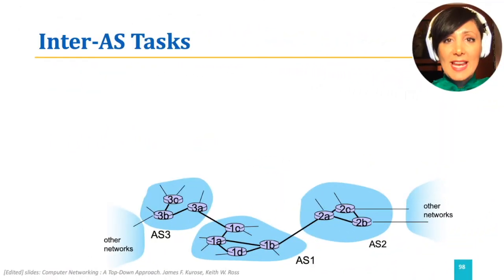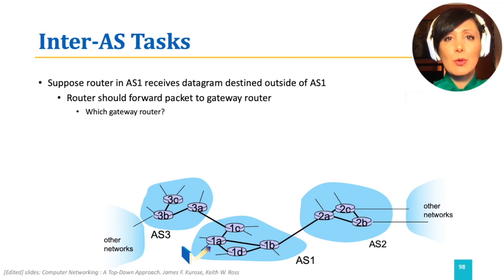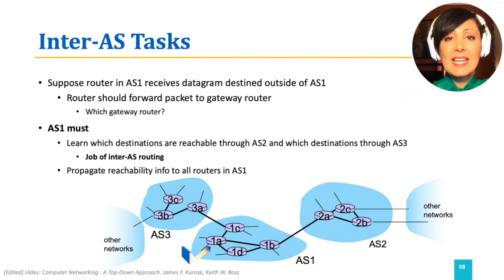Suppose router 1A in AS1 receives a datagram destined outside of AS1. How should router 1A forward the packet? The first step is to forward it to a gateway router. But AS1 has two gateway routers, 1C and 1B — which gateway router should it forward the packet to? To be able to do this, AS1 must first learn the destinations that are reachable through AS2 and AS3. This is the job of inter-AS routing. This information should be propagated to all routers within the AS so they know which gateway router to send a packet to.